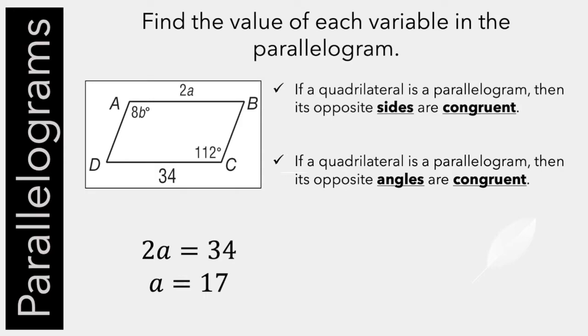We also know that opposite angles are congruent, which means that 8B equals 112. Divide both sides by 8, and B equals 14.